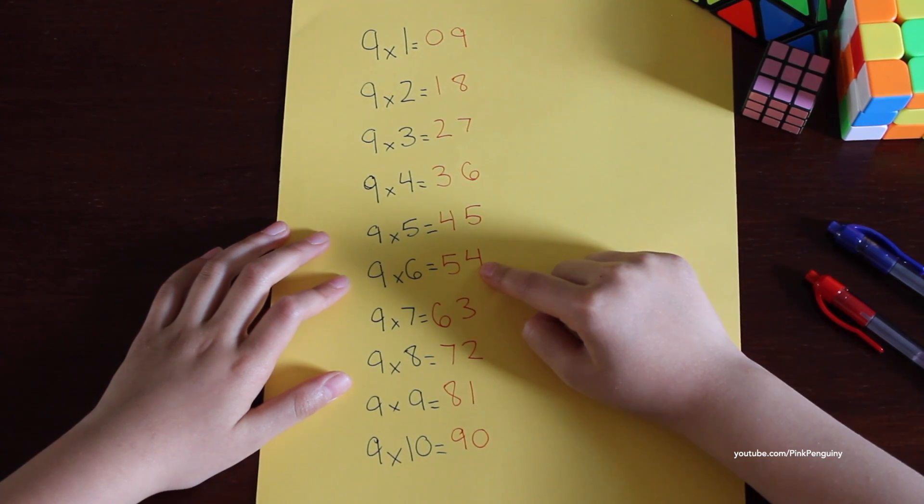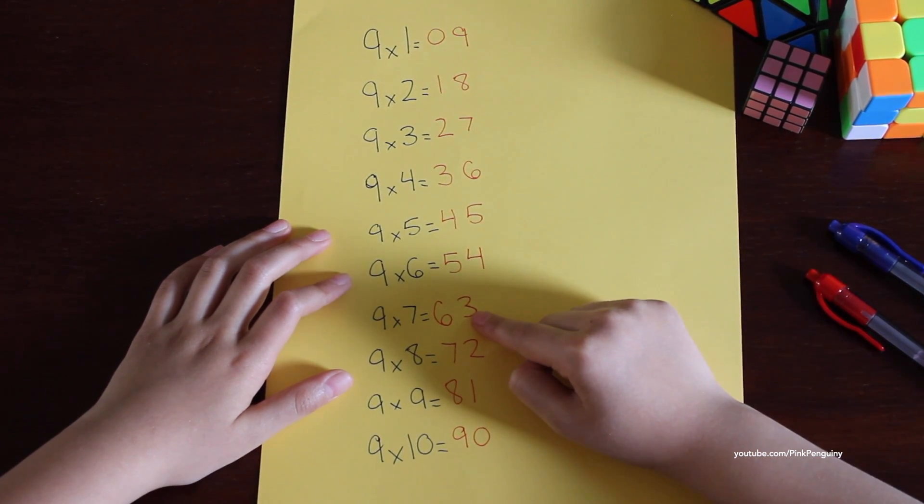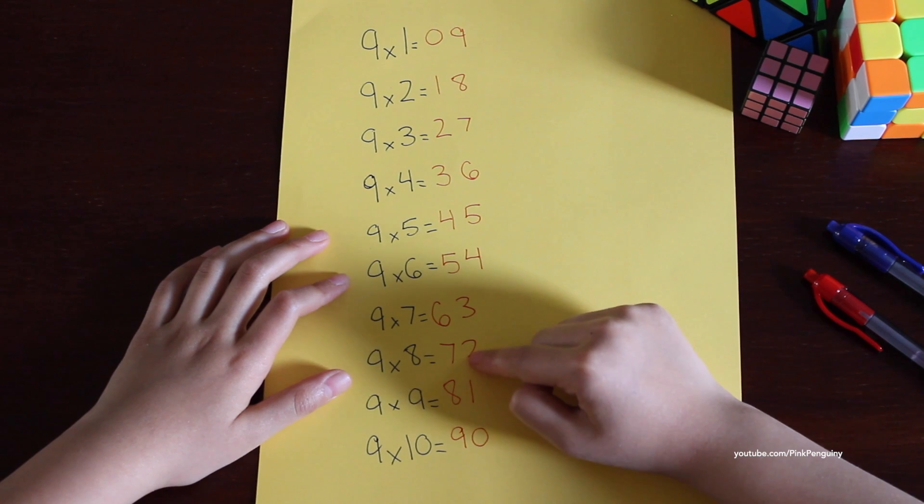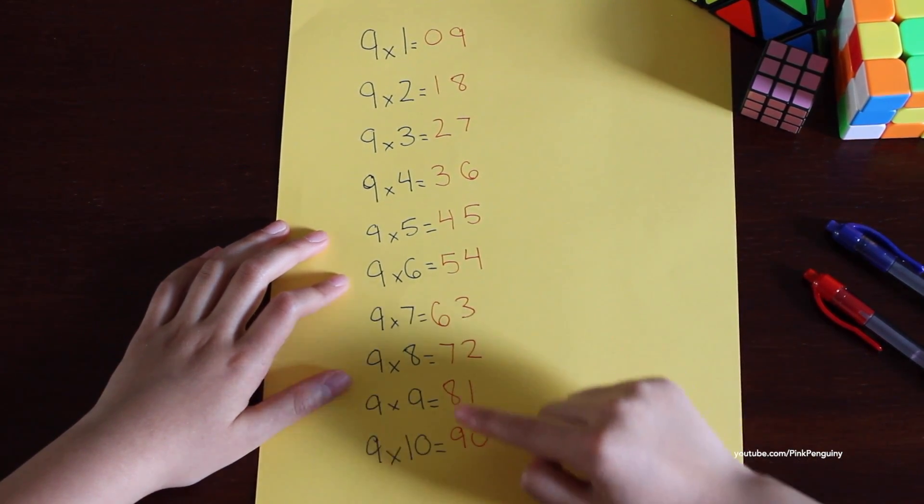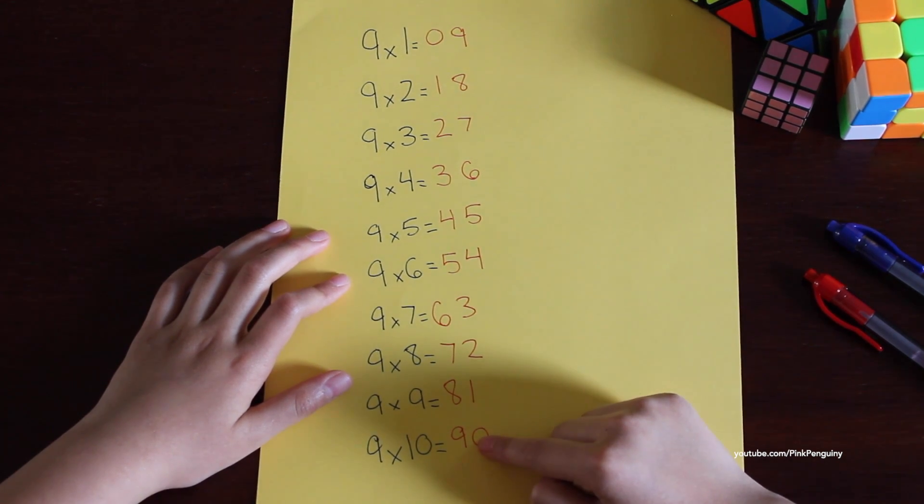Nine times six equals 54, nine times seven equals 63, nine times eight equals 72, nine times nine equals 81, and nine times ten equals 90.